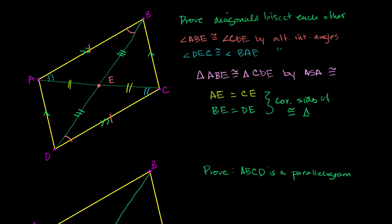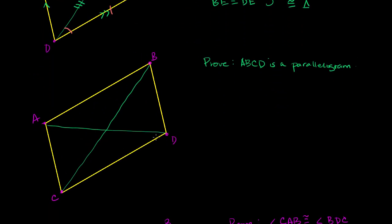Now let's go the other way around. Let's prove that if we have two diagonals of a quadrilateral that are bisecting each other, then we are dealing with a parallelogram. So we're going to assume that the two diagonals are bisecting each other — that this segment is equal to that one, and that one is equal to that. Given that, we want to prove that this is a parallelogram.